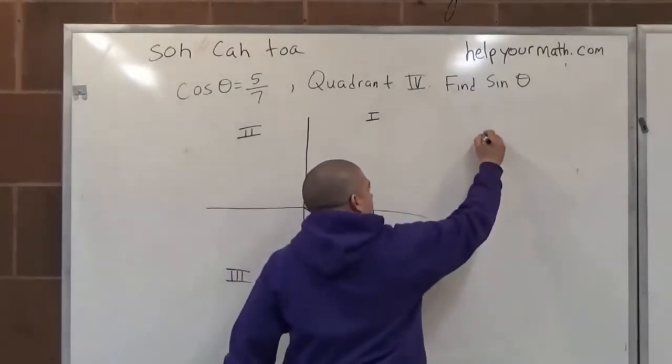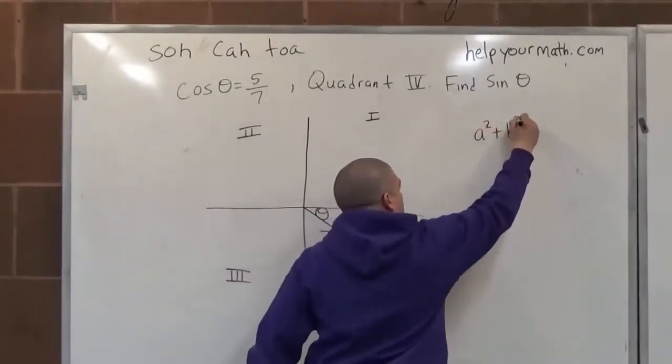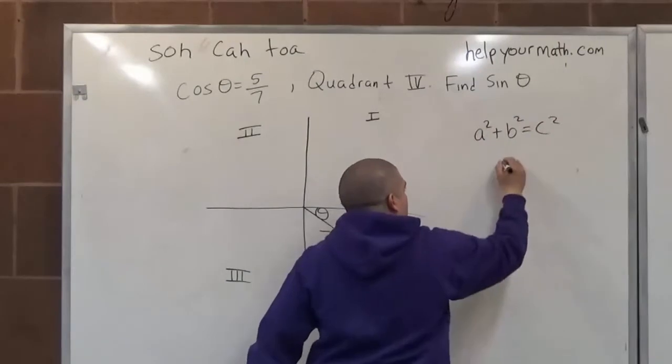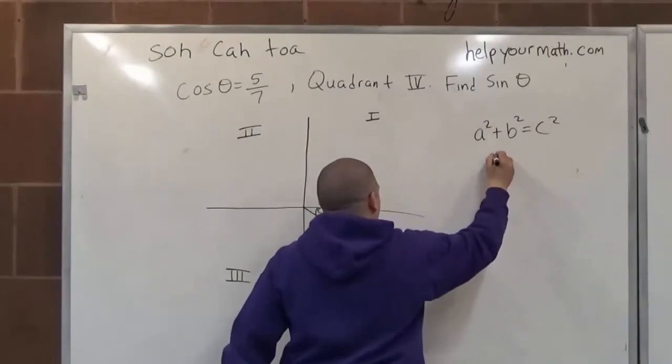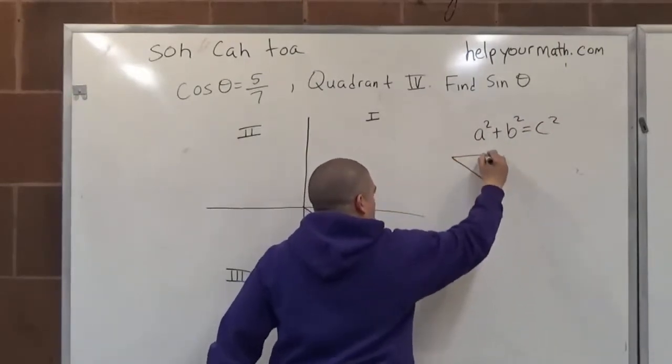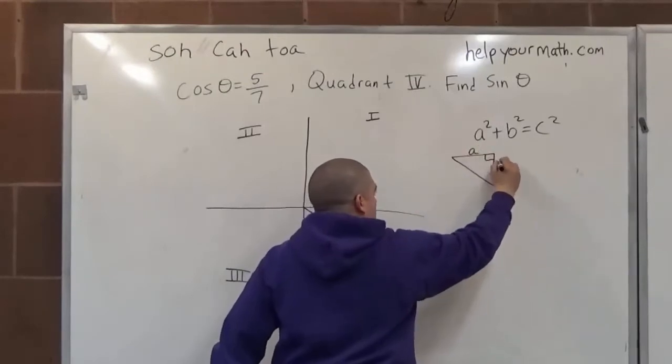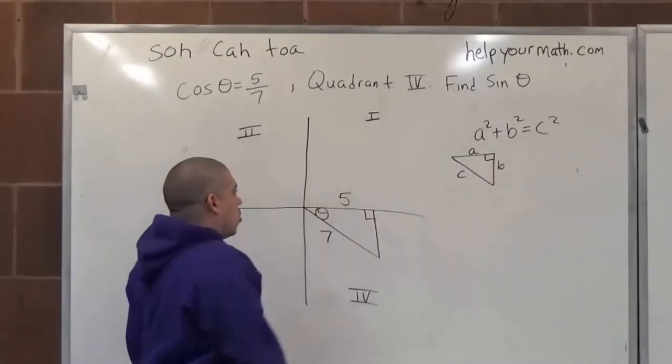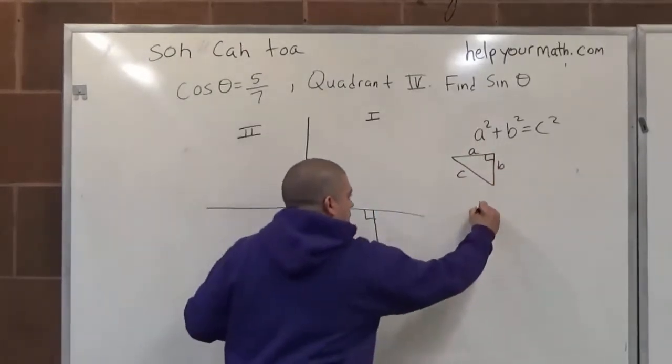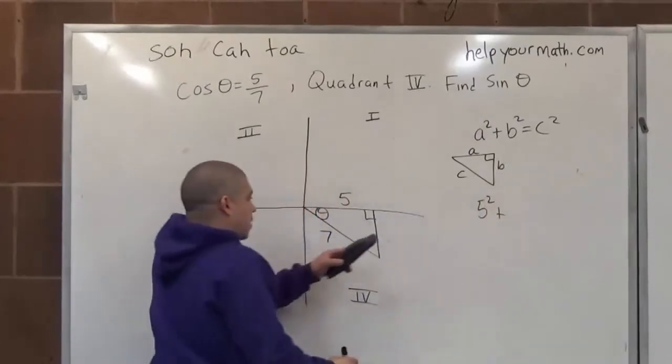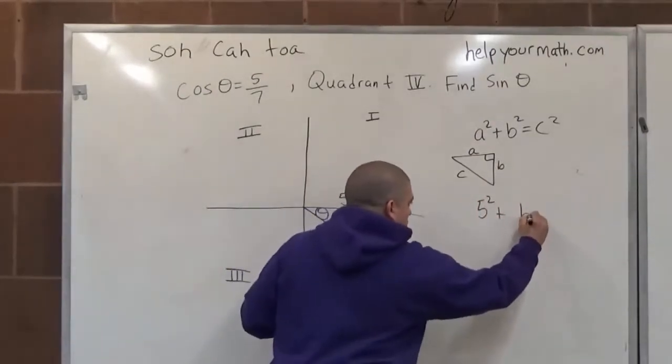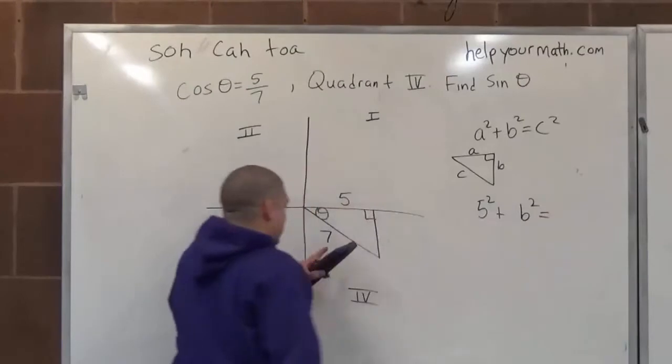The Pythagorean theorem says a squared plus b squared equals c squared. This is for whenever you are dealing with a right angle - you have your a, your b, and your c. So I can say 5 squared plus my b squared equals my c squared, which is 7 squared.